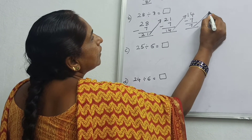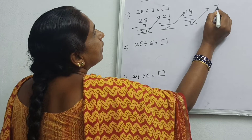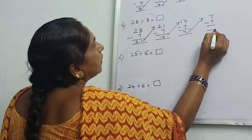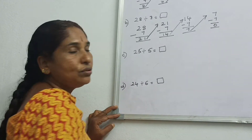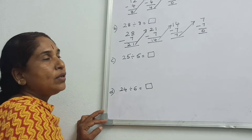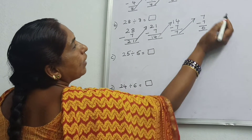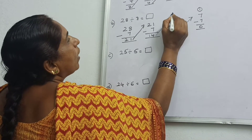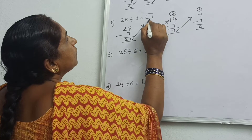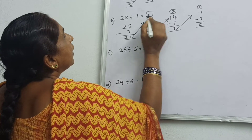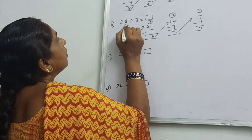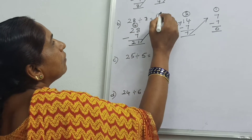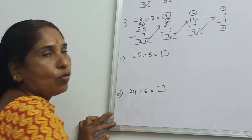Again you take this 7. Again, with which number? 7. You have to do subtraction. 7 minus 7 is equal to 0. Now count how many times you have done subtraction: 1 time, 2 times, 3 times, 4 times.